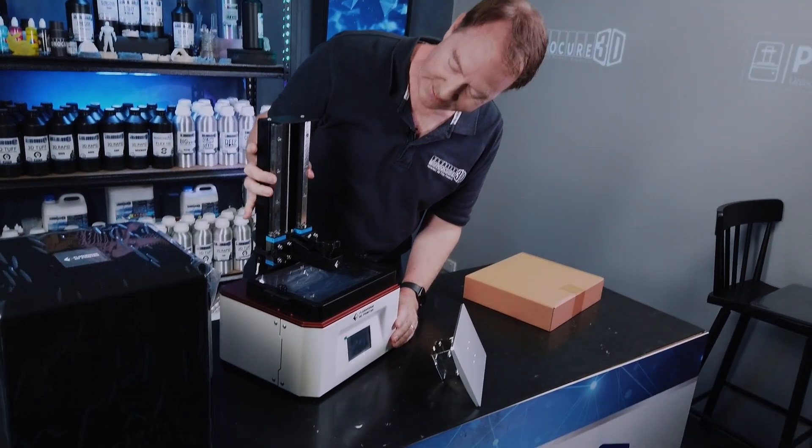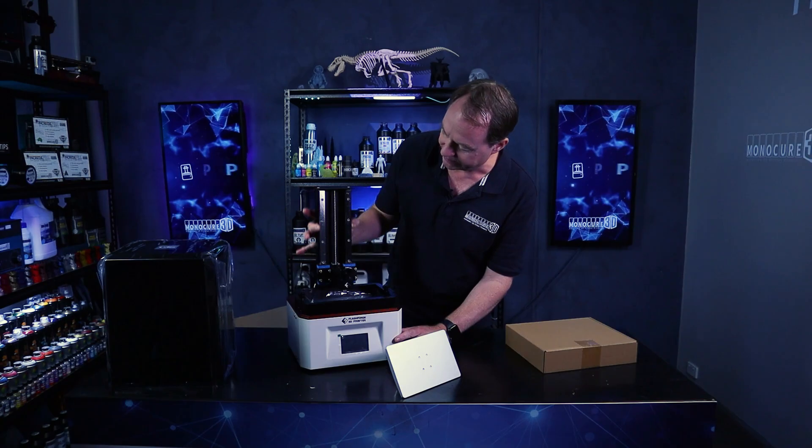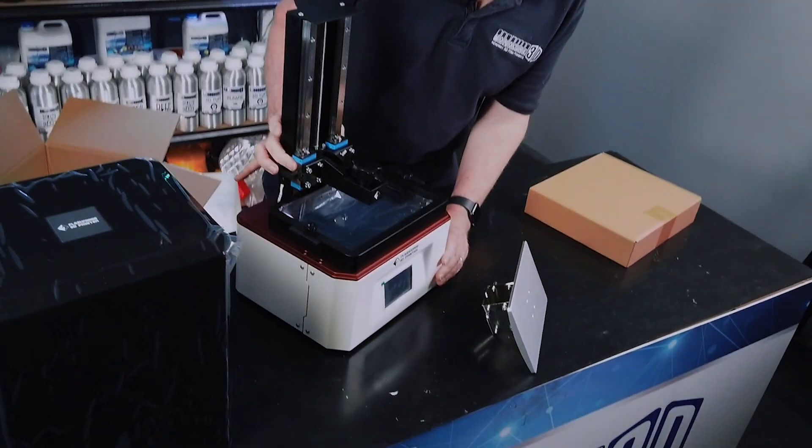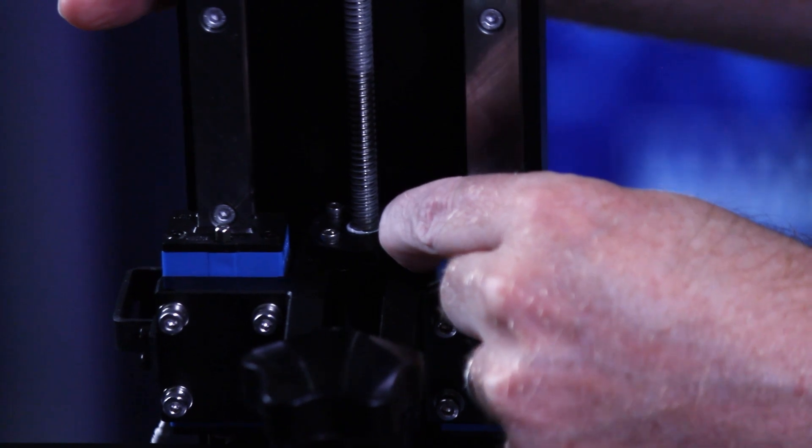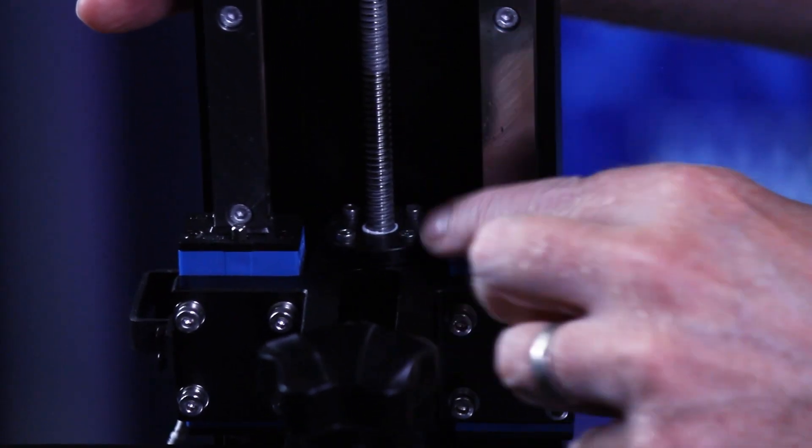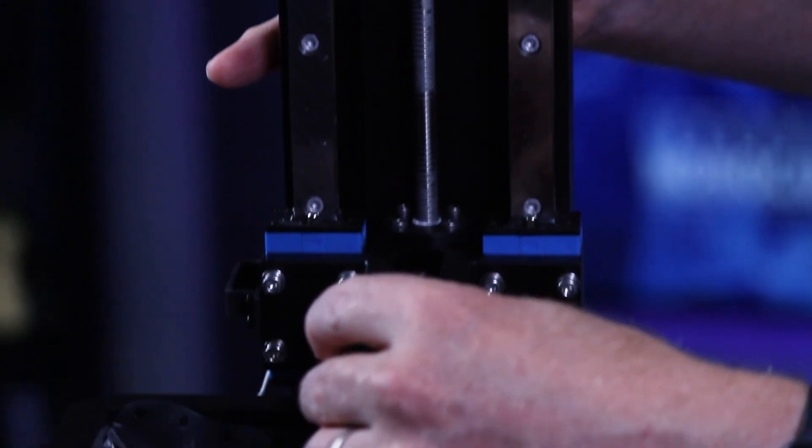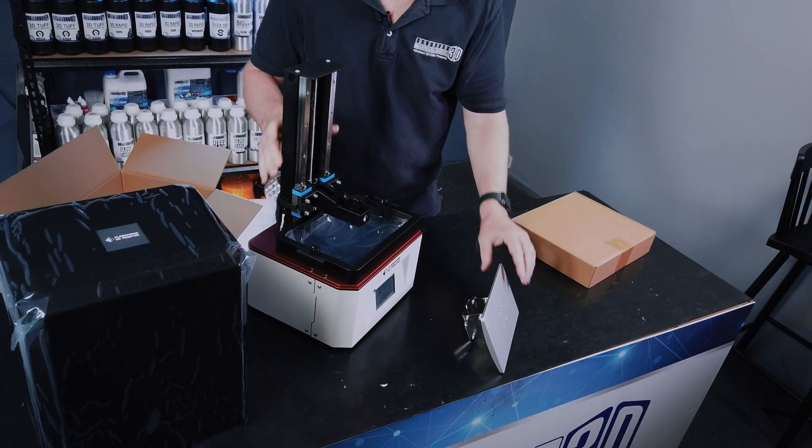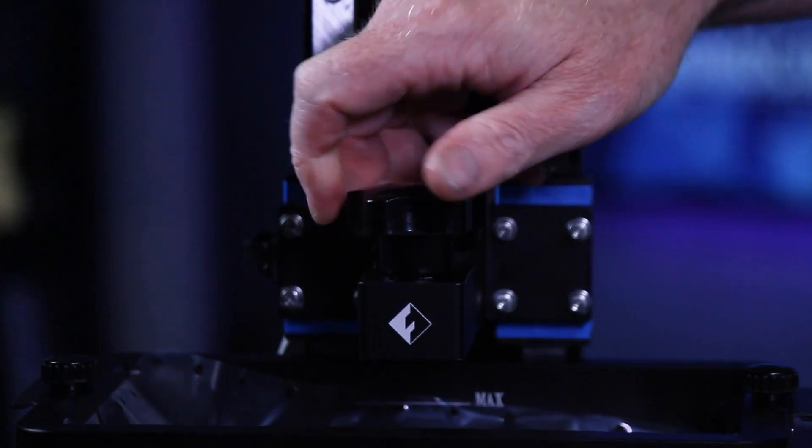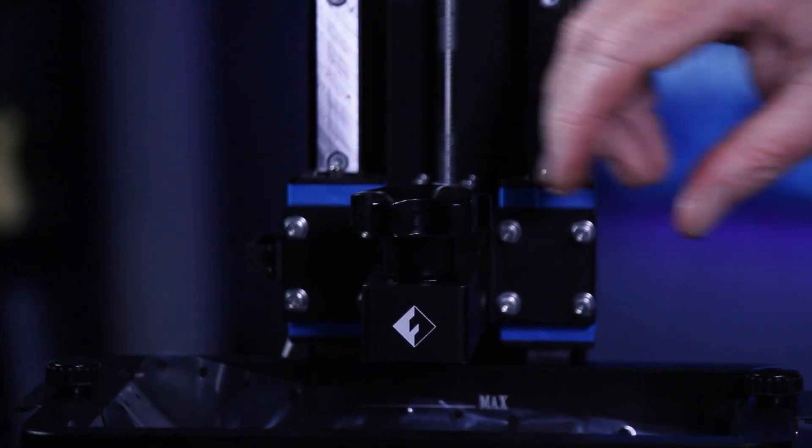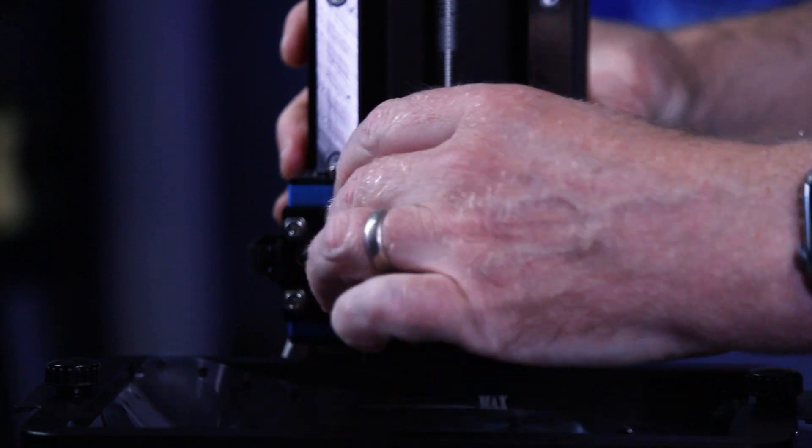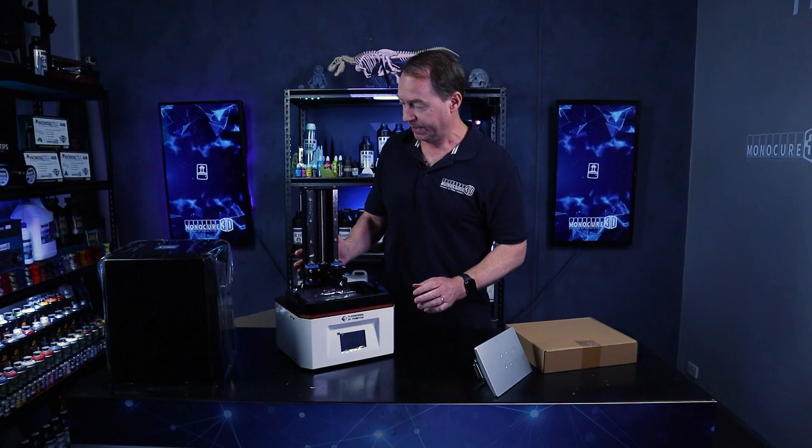The first thing that really stands out is this dual Z rail here, this Z axis. Those rails are super solid. Really beefy supports here around the rails. And probably the beefiest I've seen. A nice lead screw. A lot of screws here holding all this together. And a really solid, really, really solid build plate holder here off the Z. That's super solid. I haven't seen one that solid for a long time. That's great to see.